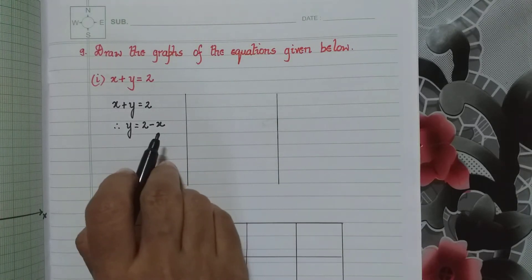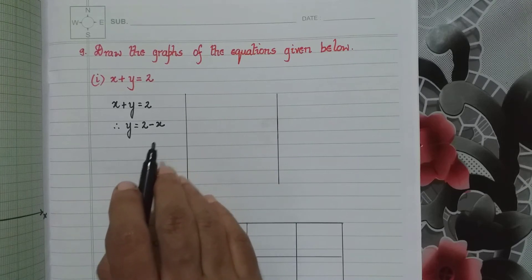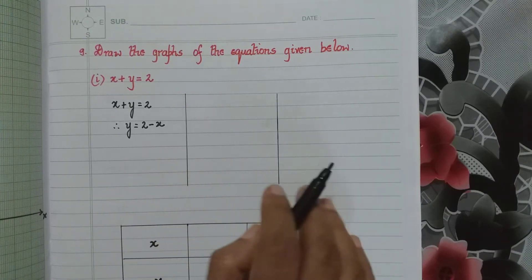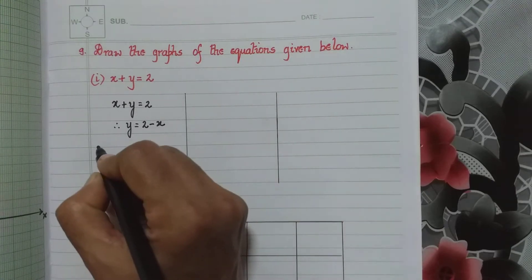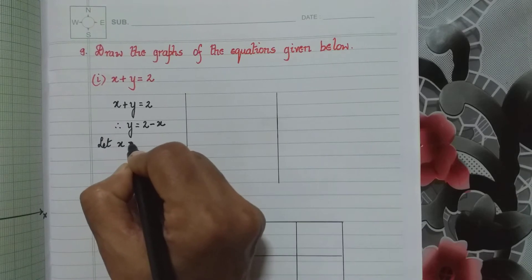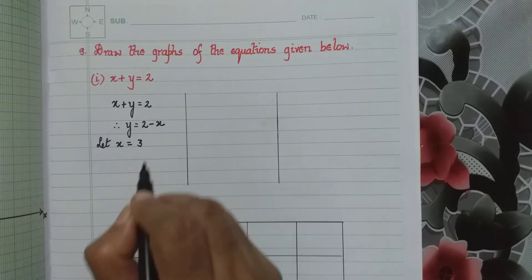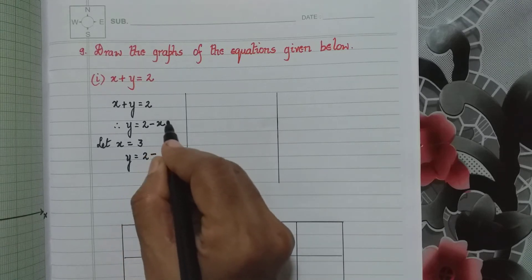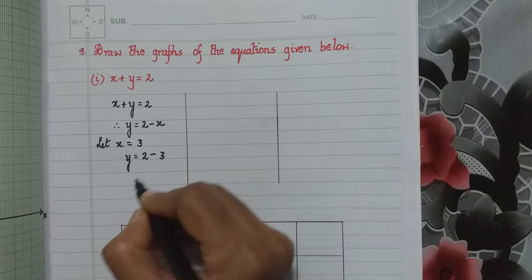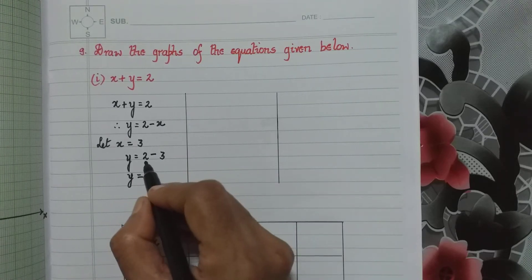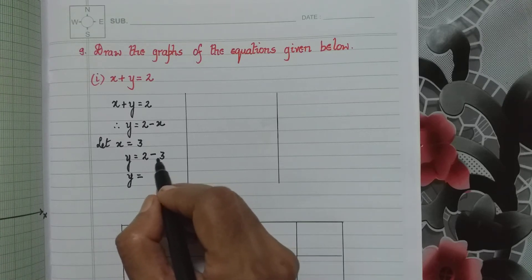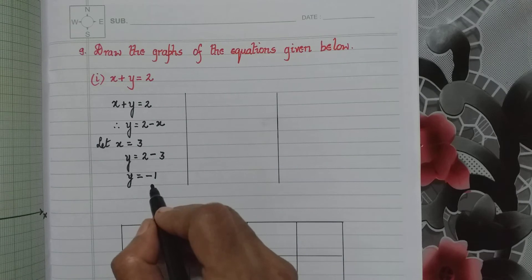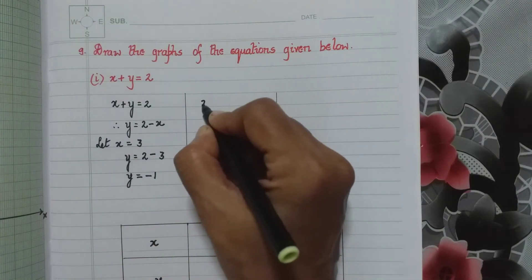We put different values for x — one positive, one zero, and one negative. Let x equal 3, a positive value. So y is equal to 2 minus 3. The sign of the bigger number is minus, so minus 3 minus 2 is 1, meaning y is equal to minus 1.